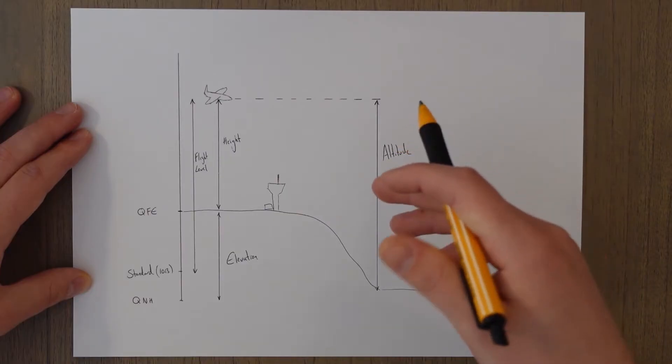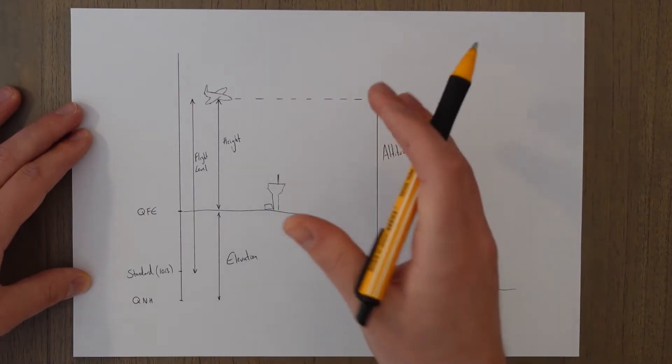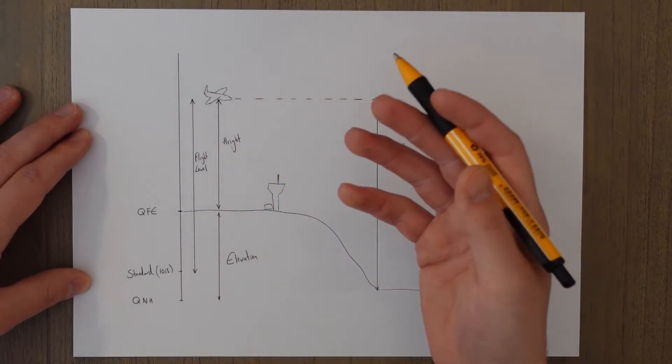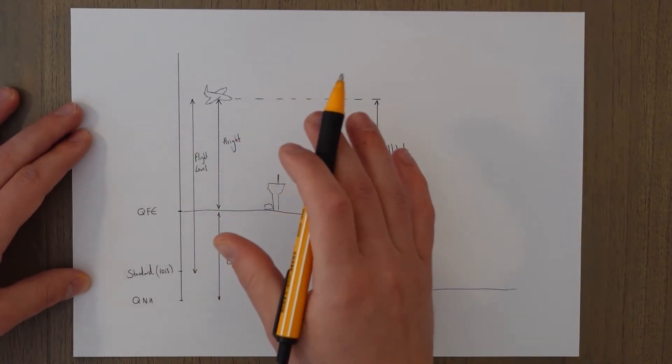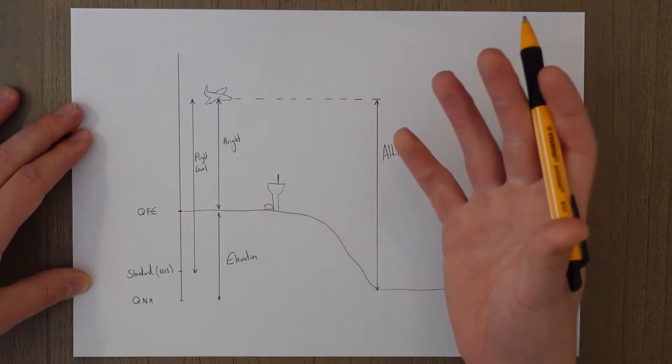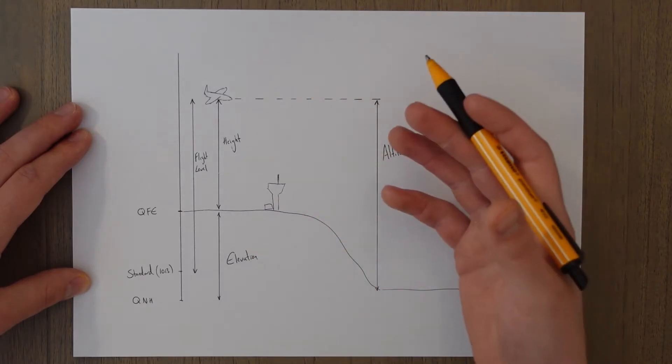I've made a video previously on altimetry in the general navigation series where I go into a bit more detail. If you're happy with pressure settings and what QNH and QFE are and standard, then continue watching this video. But if you're unhappy, I'd recommend you pause this, go and watch that other one first to explain all of these terms.